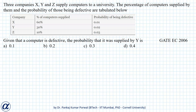In this question we are given that three companies, namely X, Y, and Z, supply computers to a university. The percentage of computers supplied by each company and the probability of those being defective are given in the table below.